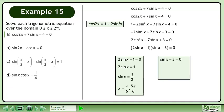Now solve sinx minus 3 equals 0. Add 3 to both sides to get sinx equals 3. There is no solution to this equation. The solution for Part A is x equals pi over 6 and 5pi over 6.